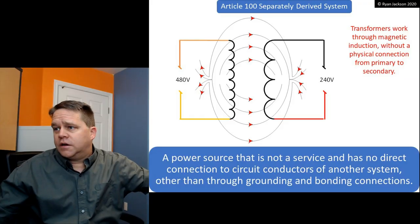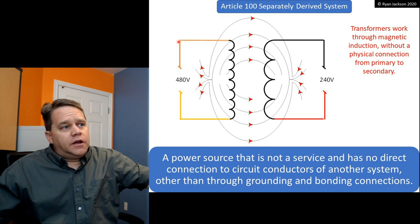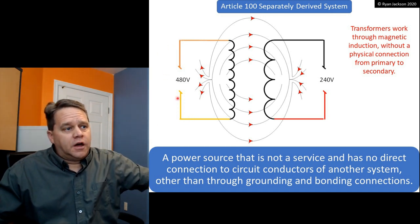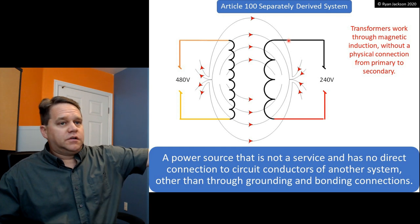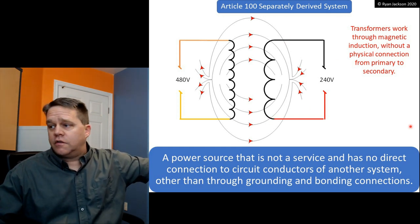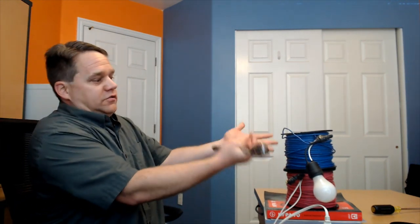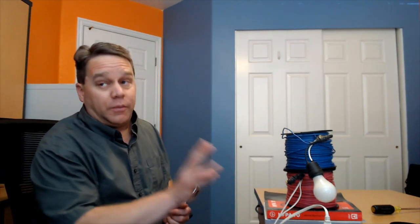On the secondary it's the exact same concept. On the primary I've got the hot and the neutral plugged in at 120 volts. On the secondary of my little transformer, I've got one end connected to my lamp holder and the other end connected to the other side of the lamp holder. When I turn it on, you should see that the light bulb will glow ever so slightly — and that's because this is not a particularly efficient machine. It's two coils of wire and some twist-on wire connectors and electrical tape, so it's not that efficient.